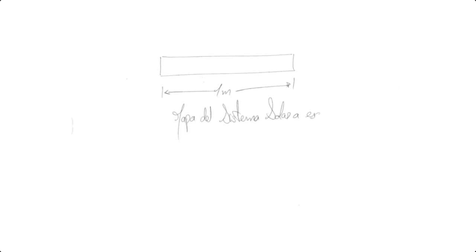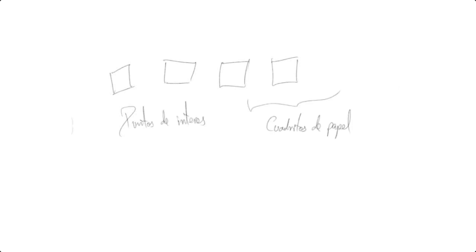Tengan listo su tira de papel de un metro, porque vamos a construir nuestro mapa del Sistema Solar a escala, donde haremos algunas paradas de interés. Alisten también sus colores, lápices y todo lo que tengan para marcar estas estaciones en nuestro mapa. Tendremos pequeños cuadritos de papel donde anotaremos nuestros puntos de interés y al final los pegaremos en nuestra tira de papel.